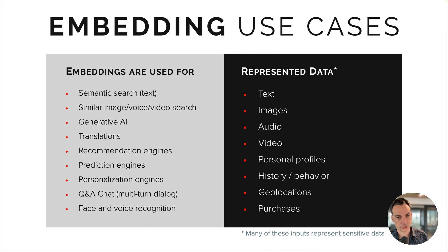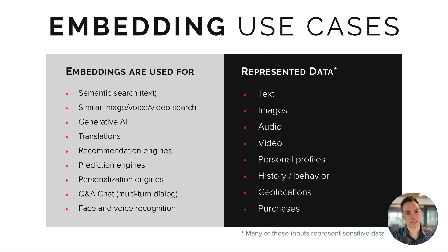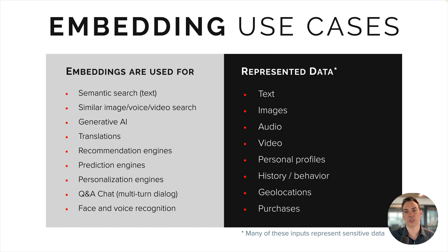Similarity searches are a major use case, but basically any kind of data that has a model trained on it can do lots of things with that data. Embeddings are used for face and voice recognition, generative AI, prediction engines, personalization, Q&A chat, especially for remembering the history of a chat, and much more.